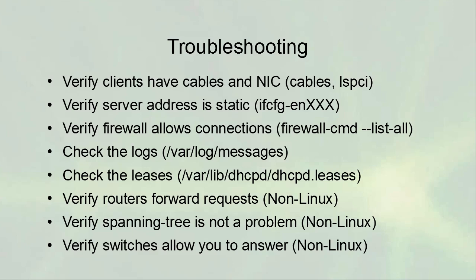For client troubleshooting, first check physical connections — make sure clients have NICs and cables. Use the 'lspci' command on Linux to verify you have a NIC. Verify that your DHCP server has a static IP address, because a DHCP server will not work properly if it is getting its address from DHCP itself. Also verify the firewall allows connections, check the logs for errors, and check the leases file to confirm leases are actually being handed out.